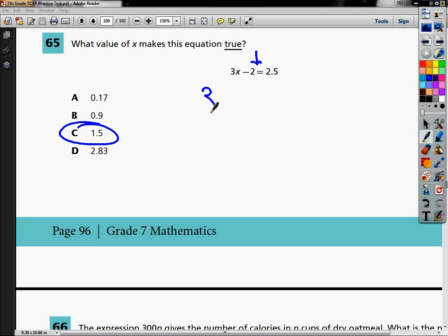I'm going to rewrite this statement as 3 and instead of the x I'm going to put a parenthesis because the parenthesis means multiply. And then I'm going to do minus 2. What I'm going to do is start plugging in my answer choices to see if I can get it to equal 2.5, thus making a truth statement.